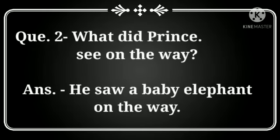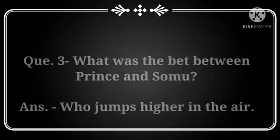Question number 2: What did Prince see on the way? Prince ने रास्ते में क्या देखा? Answer: He saw a baby elephant on the way. उसने रास्ते में baby elephant देखा था।